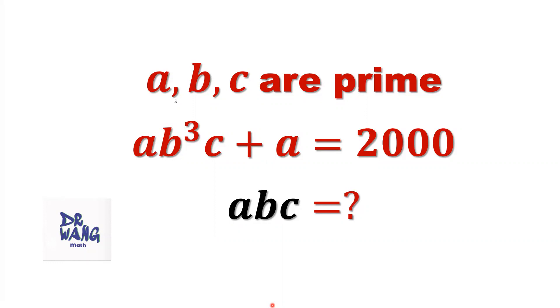If A, B, and C are prime, A times B to the power 3 times C plus A equals 2000, what is the value of A times B times C?